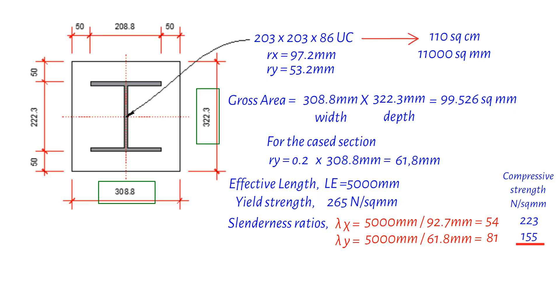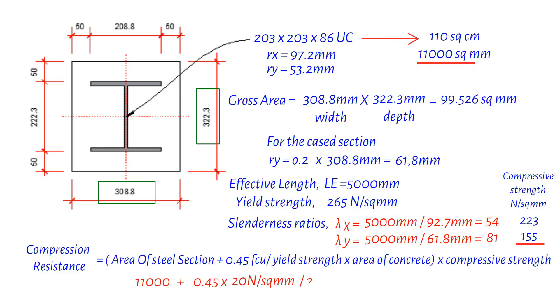Next up is the calculation of compression resistance. We use the formula shown, and taking FCU as 20 newton per square millimeters, we find the compression resistance to be 2229 kilonewtons. Ever wondered why this value shouldn't be greater than the short-struct capacity of the section?